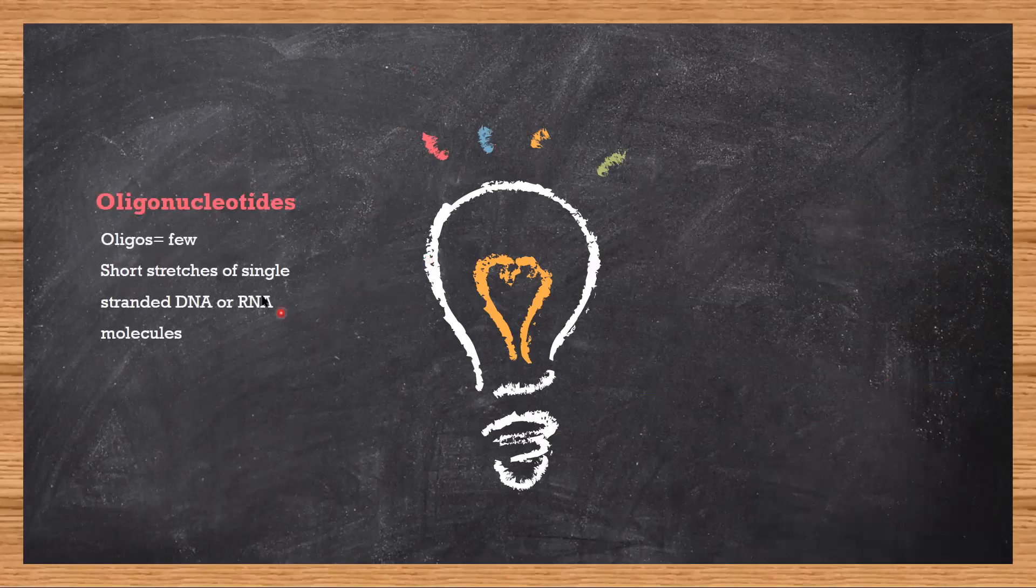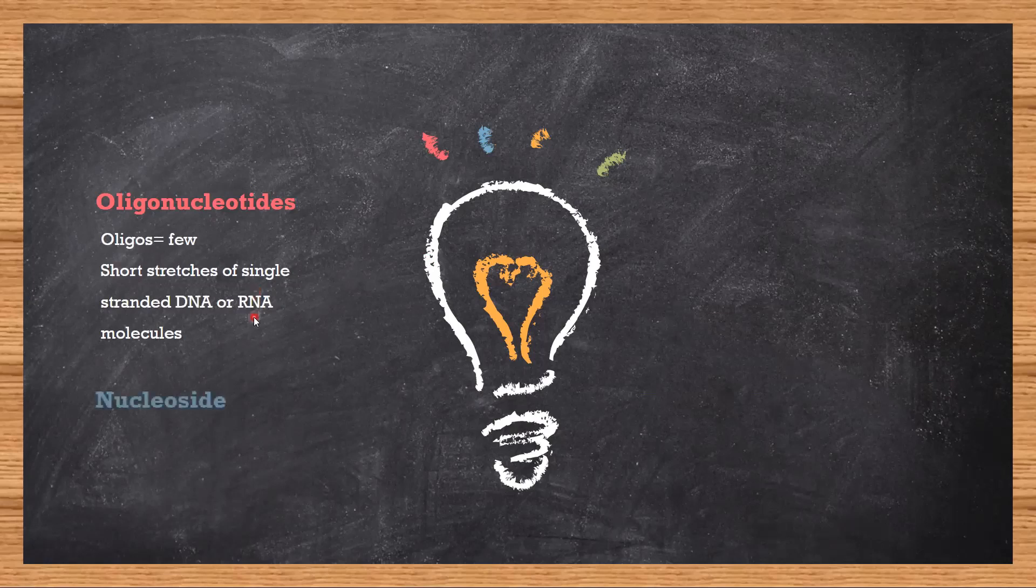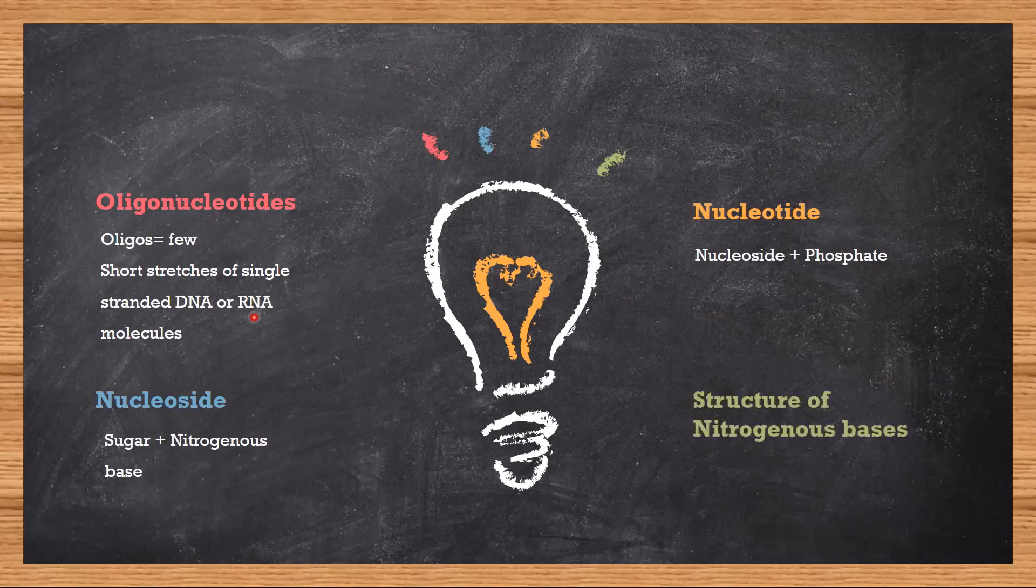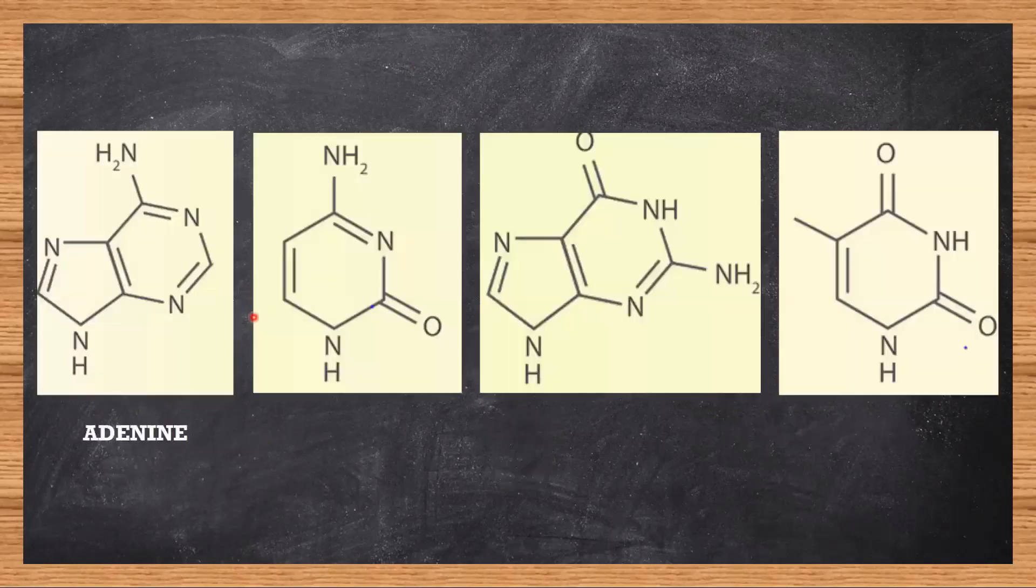What is a nucleoside? It is sugar plus nitrogenous base. Nucleotide is nucleoside plus a phosphate. Finally, you need to know the nitrogenous bases: adenine, guanine, cytosine, and thymine.